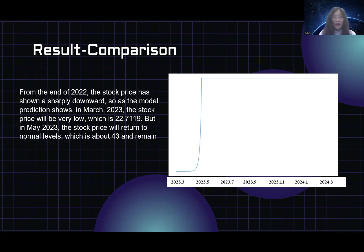And the right figure shows how the price will perform in the next two years. From the end of 2022, the stock price has shown a sharply downward trend. So as the model prediction shows, in March 2023 the stock price will be very low, which is about 22.7. But in May 2023, the stock price will return to normal levels, which is about 43 and remain at this level.